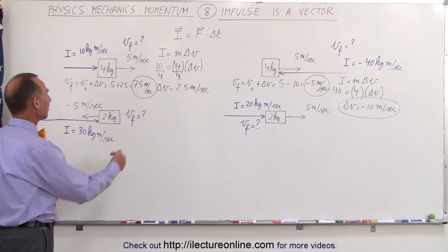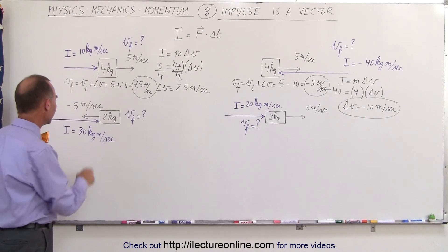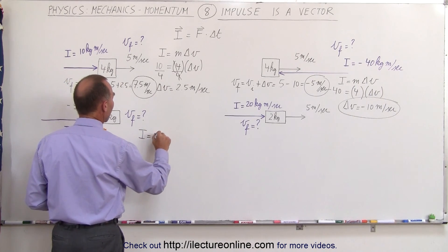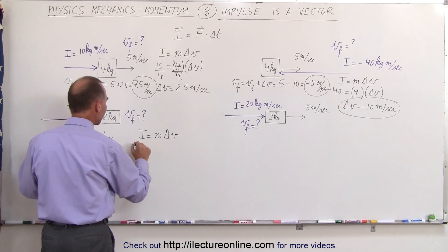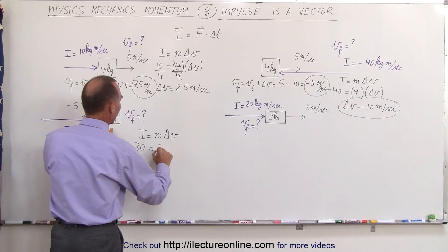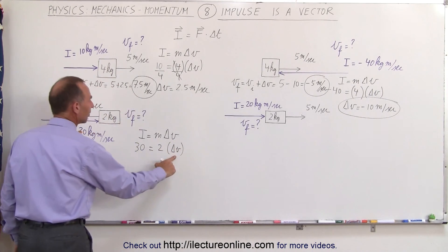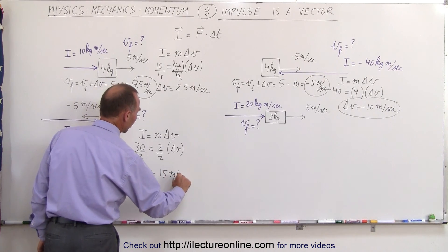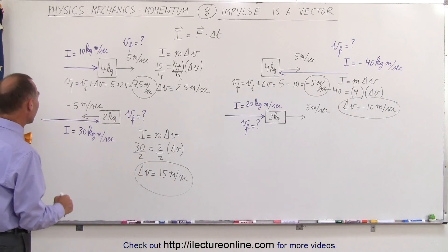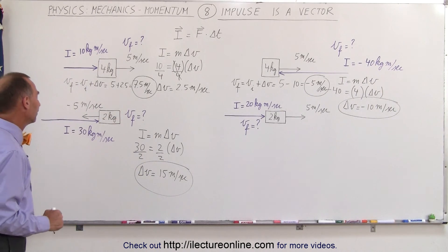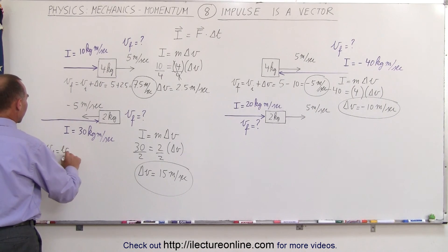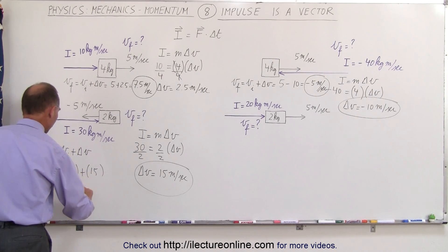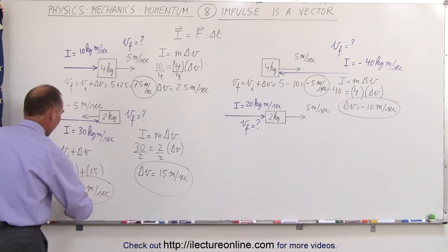For our third example, we have a 2 kilogram object moving to the left at 5 meters per second, and a positive impulse of 30 kilogram·meters per second is applied to it. The impulse equals mass times change in velocity: 30 equals 2 times the change in velocity. Dividing both sides by 2, the change in velocity is positive 15 meters per second. So v final equals negative 5 plus positive 15, which is 10 meters per second in the positive direction.